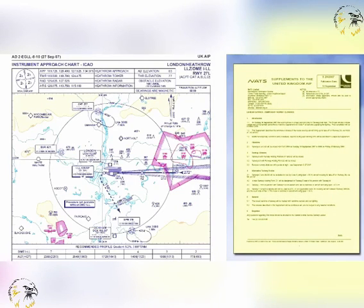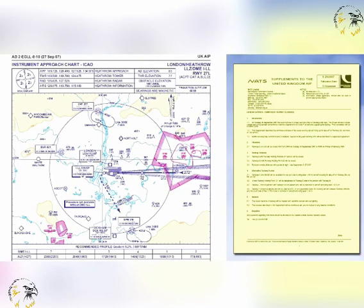Temporary changes of three months or longer and short-term amendments that contain extensive text or graphics are published as supplements to the aeronautical information publication. Each is serially numbered, coloured yellow and added to the aeronautical information publication as supplement pages for the duration of the change. Supplement checklists are issued monthly so that obsolescent information can be deleted.